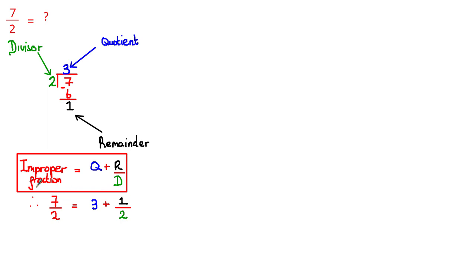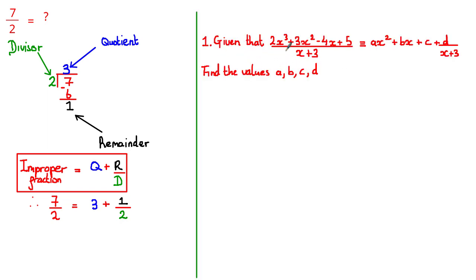We're going to use the same formula to convert improper algebraic fractions into mixed algebraic fractions. In this example, we are told that (2x³ + 3x² − 4x + 5) / (x + 3) is equivalent to Ax² + Bx + C + D/(x + 3). We need to find the values of A, B, C, and D. We can see the improper algebraic fraction has degree 3 in the numerator and degree 1 in the denominator, and the denominator of the proper fraction matches the left-hand side.